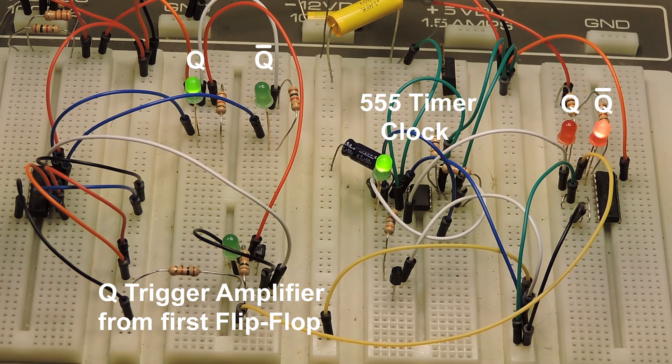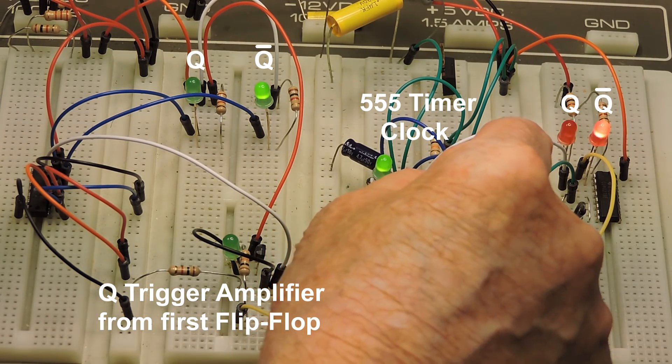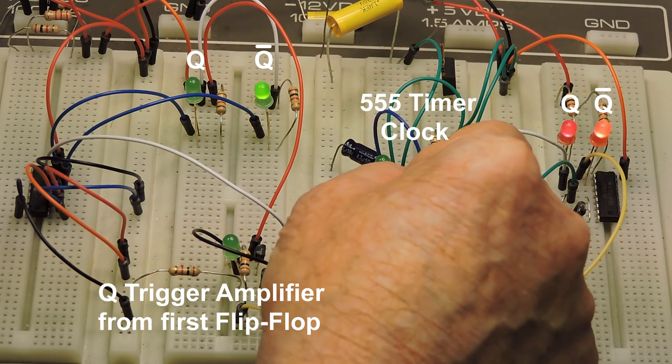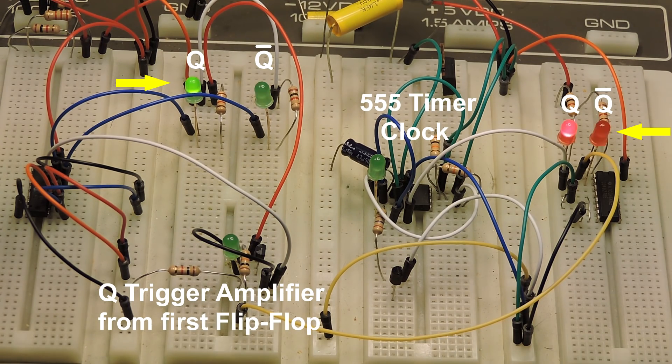Now I'm going to short out the diode on the 555 timer. The other lights did not change. Now you can see that the left flip-flop is one-half the speed of the right flip-flop.